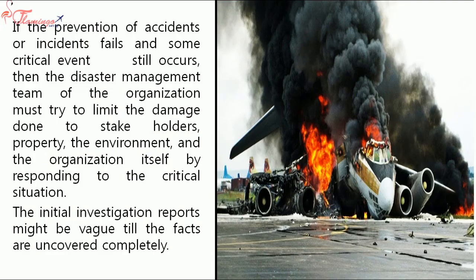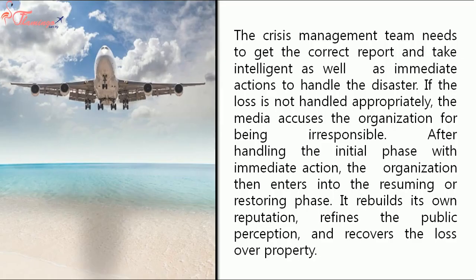If the prevention of accidents or incidents fails and some critical event still occurs, then the disaster management team of the organization must try to limit the damage done to stakeholders, property, the environment, and the organization itself by responding to the critical damage. The initial investigation reports might be vague till the facts are uncovered completely. The crisis management team needs to get the correct report and take intelligent as well as immediate actions to handle the disaster. If the loss is not handled appropriately, the media accuses the organization for being irresponsible.